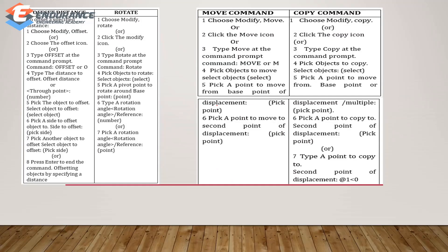Next is offset distance. Let's modify the offset distance. Choose the offset icon or type the offset command. Type the offset distance, then select the offset object. If you have another object, you can select another object. Then enter the offset distance. If you rotate, you can rotate using the rotate icon or click the command prompt window and type the command.